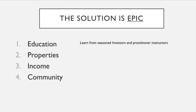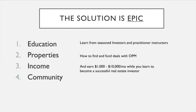Education here doesn't mean going to school and getting a career — it means learning from seasoned investors and practitioner instructors on concepts we are not taught in school, like how to fix and flip properties or invest in passive income. Learn those strategies by investing in financial education. Learn from seasoned investors how to find and fund deals using other people's money — OPM. In the process, earn $10,000 a month while you learn and become a successful investor yourself, with the support and mentorship of a nationwide community.